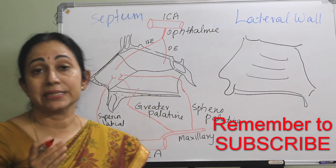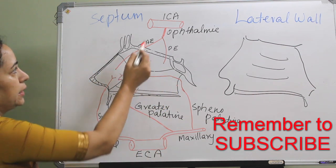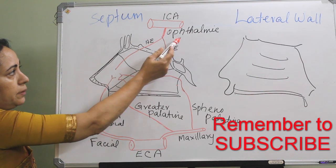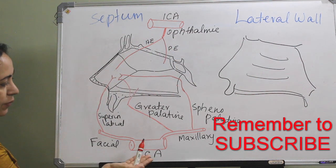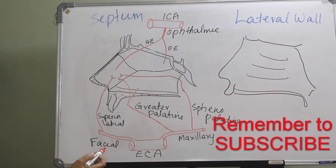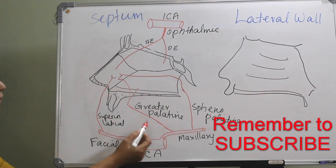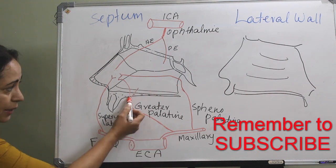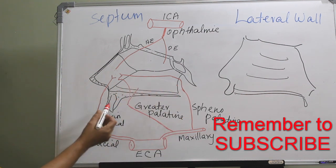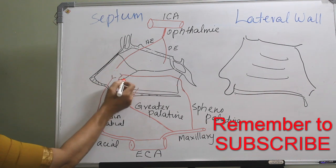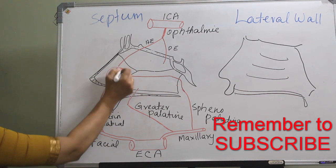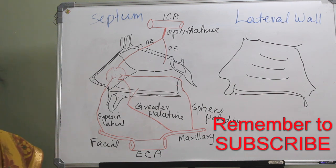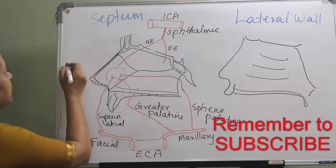So this is the blood supply of the septum. From the internal carotid artery, branches come as anterior ethmoid and posterior ethmoid. And from the external carotid system, it is the facial through superior labial — the septal branches of superior labial — and from the maxillary it is the greater palatine and sphenopalatine. These four branches come and anastomose in Little's area, which is in the anterior inferior part of the septum.